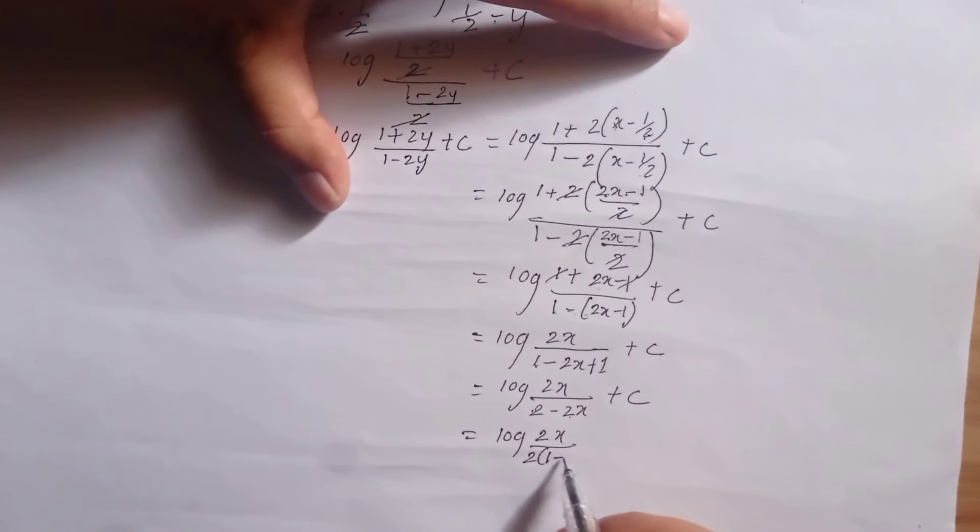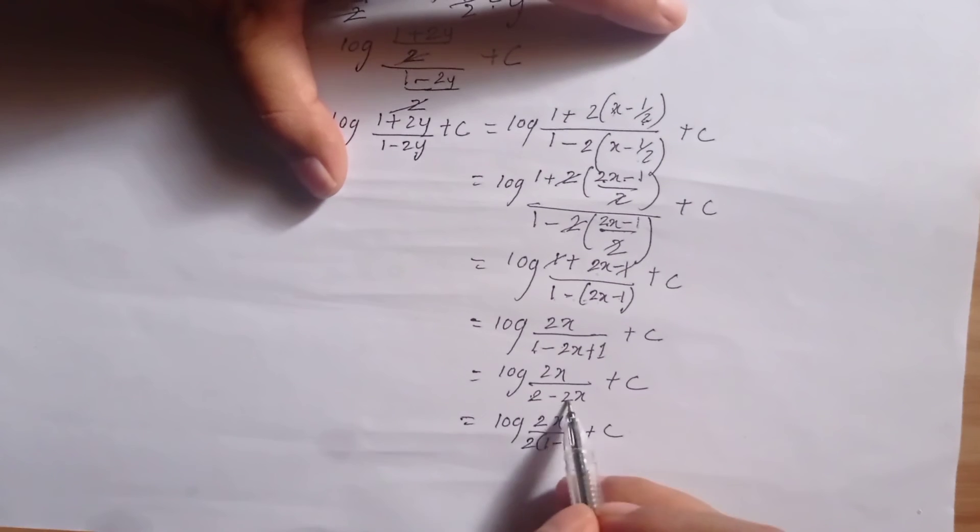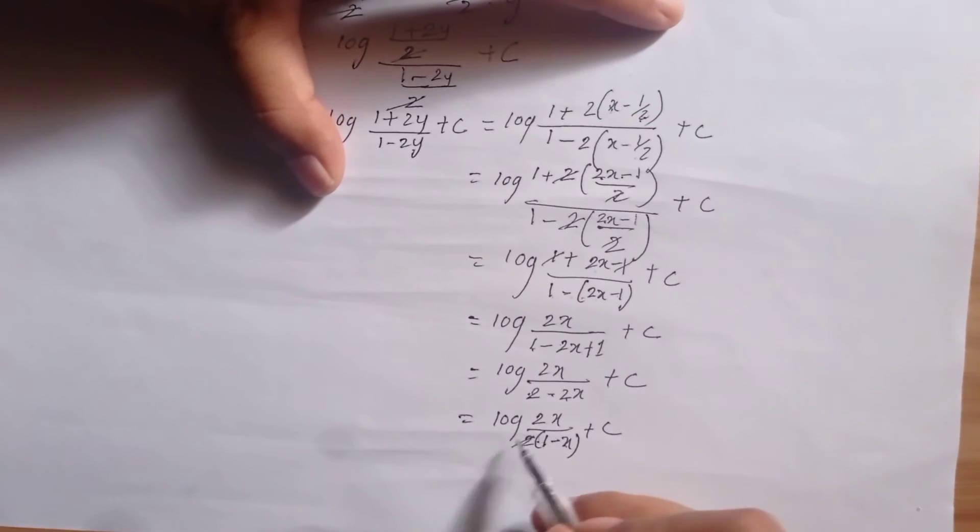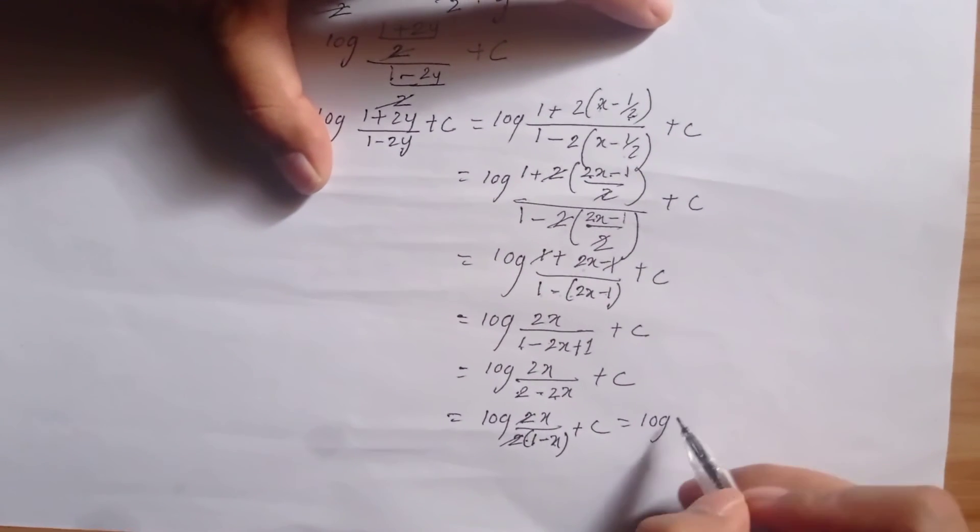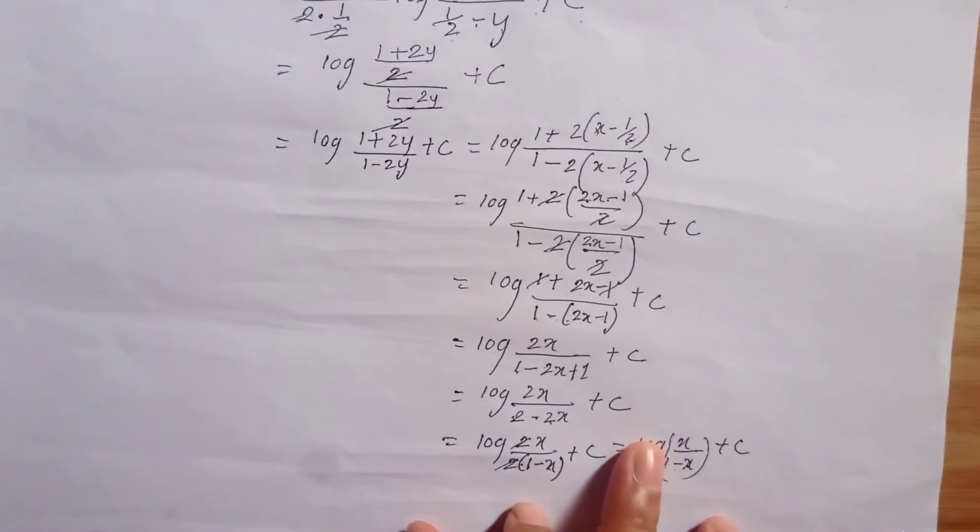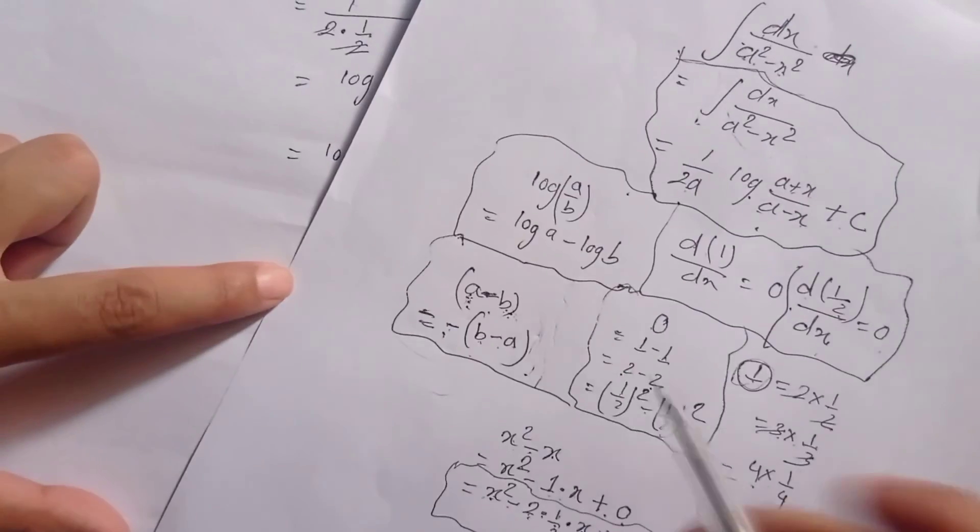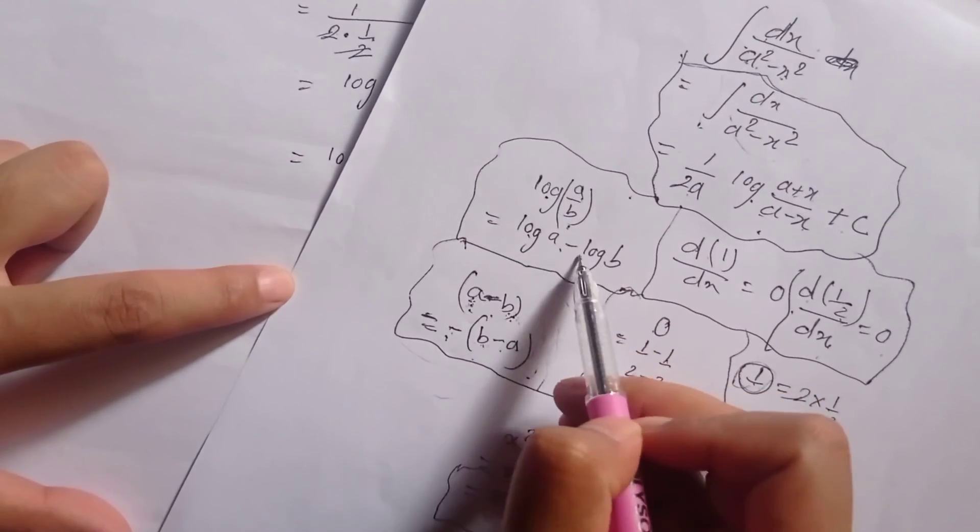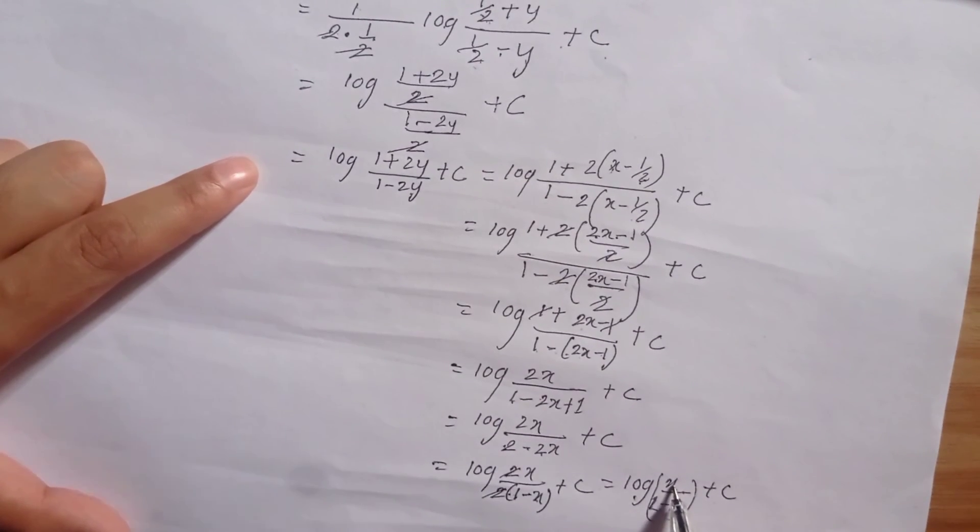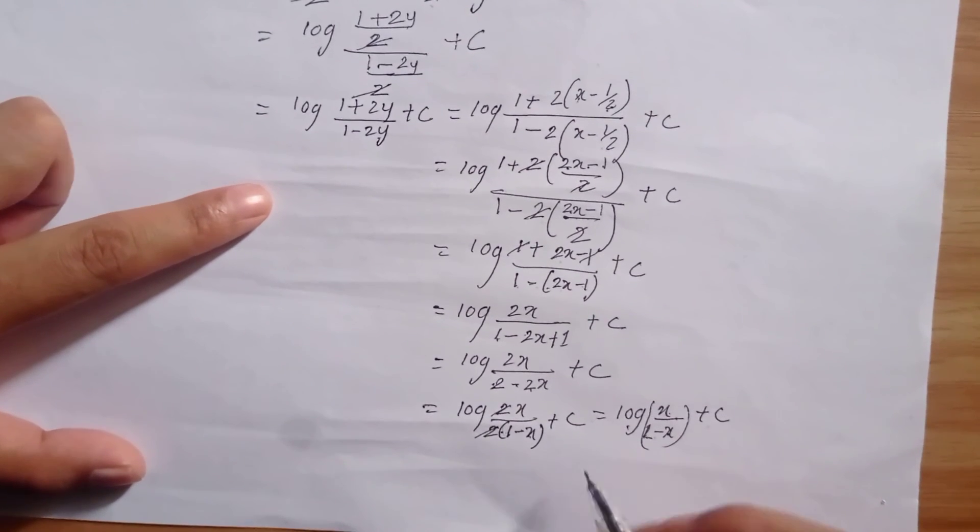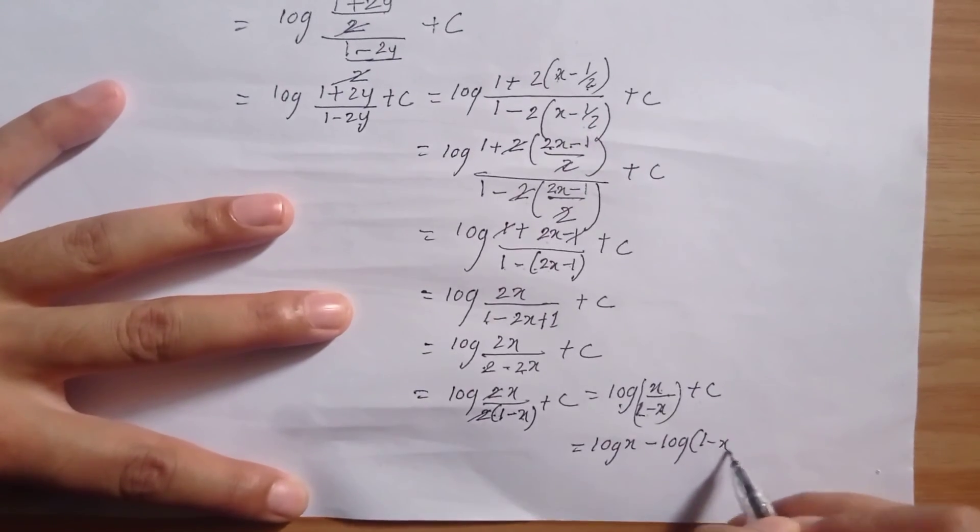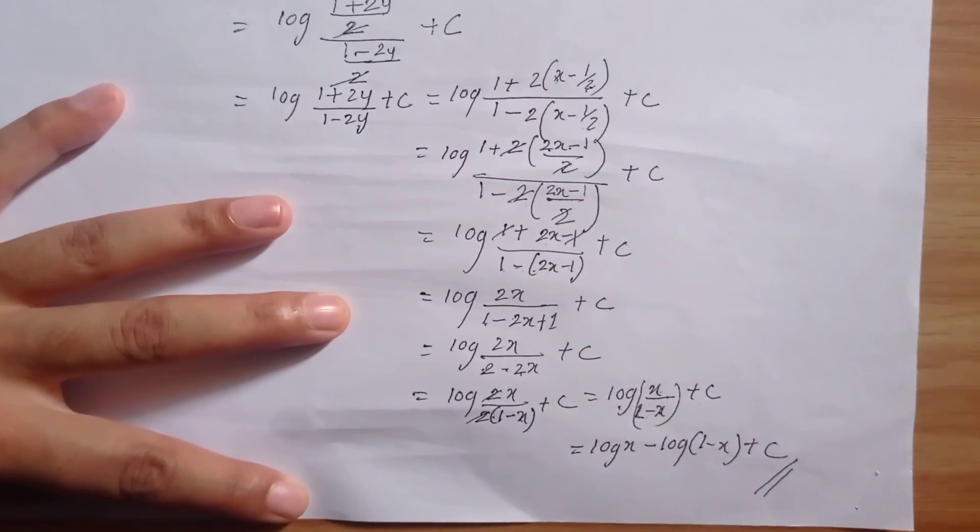Two cancels, so we get log x by 1 minus x plus c. We can also write log a by b in the form log a minus log b. So the answer is log x minus log 1 minus x plus c. This is the final answer.